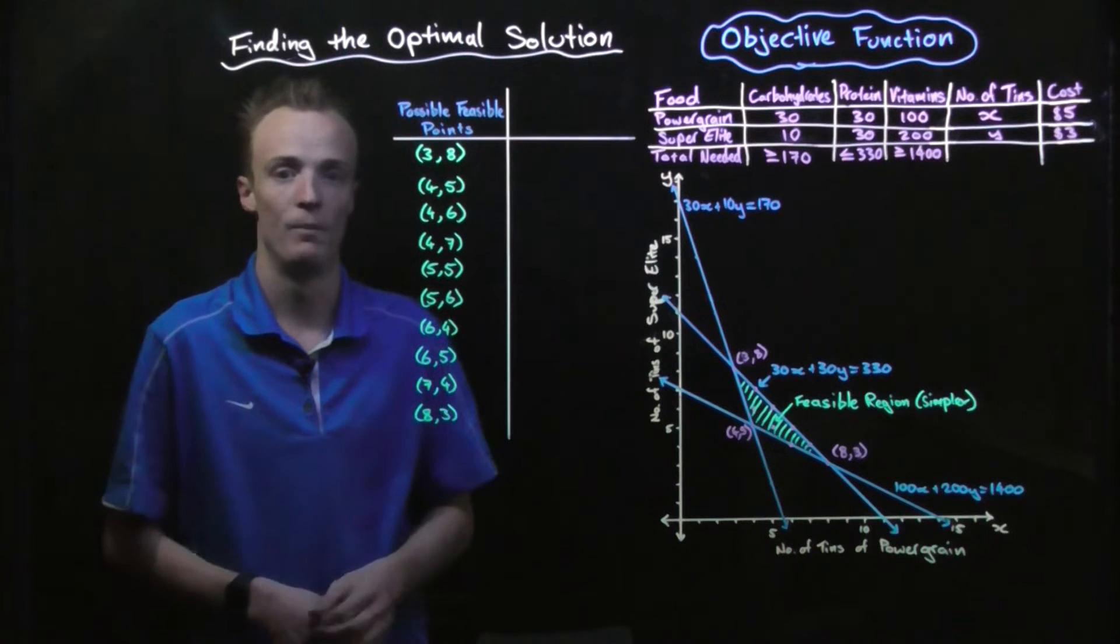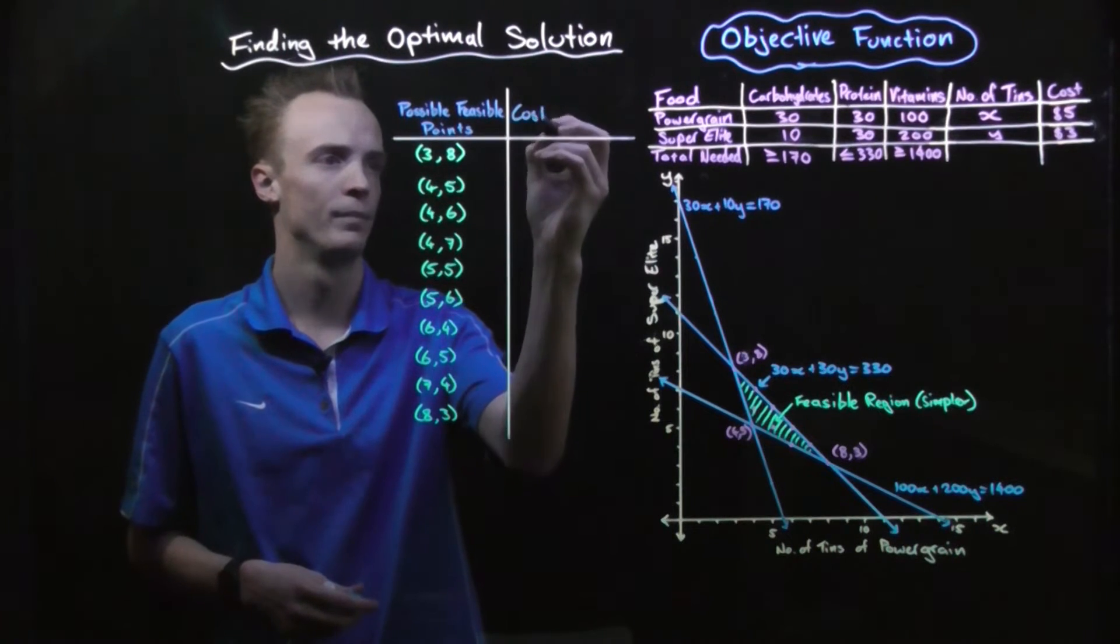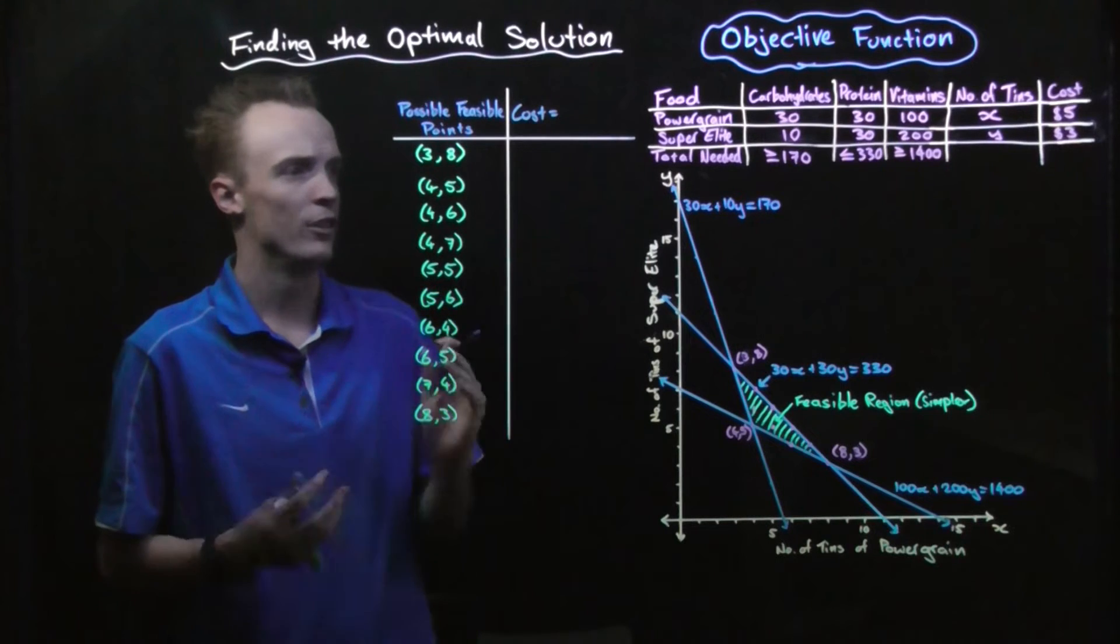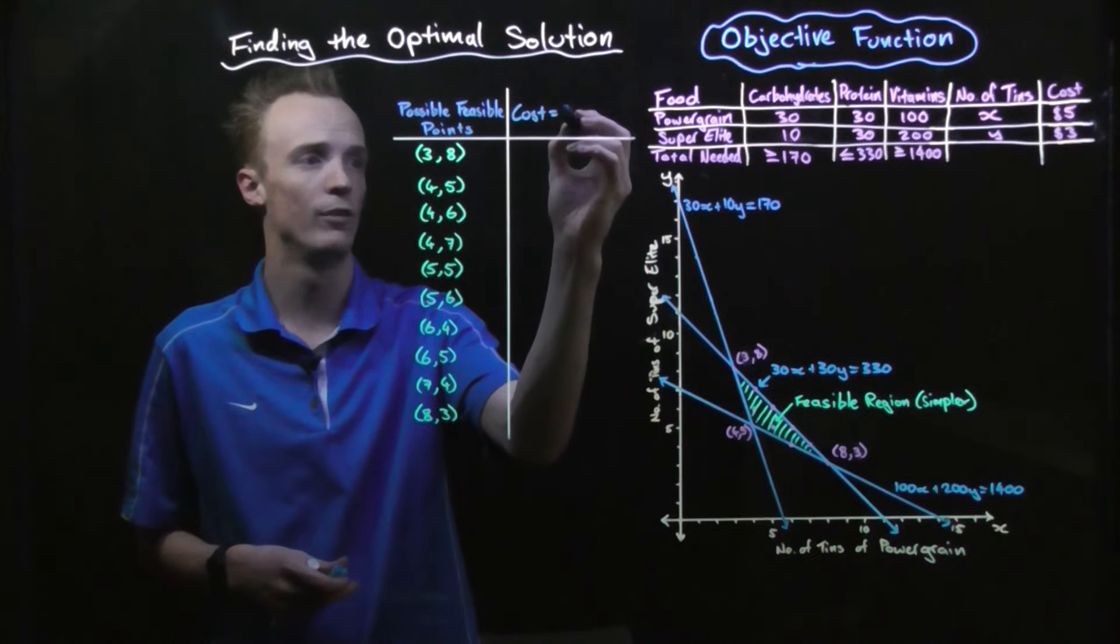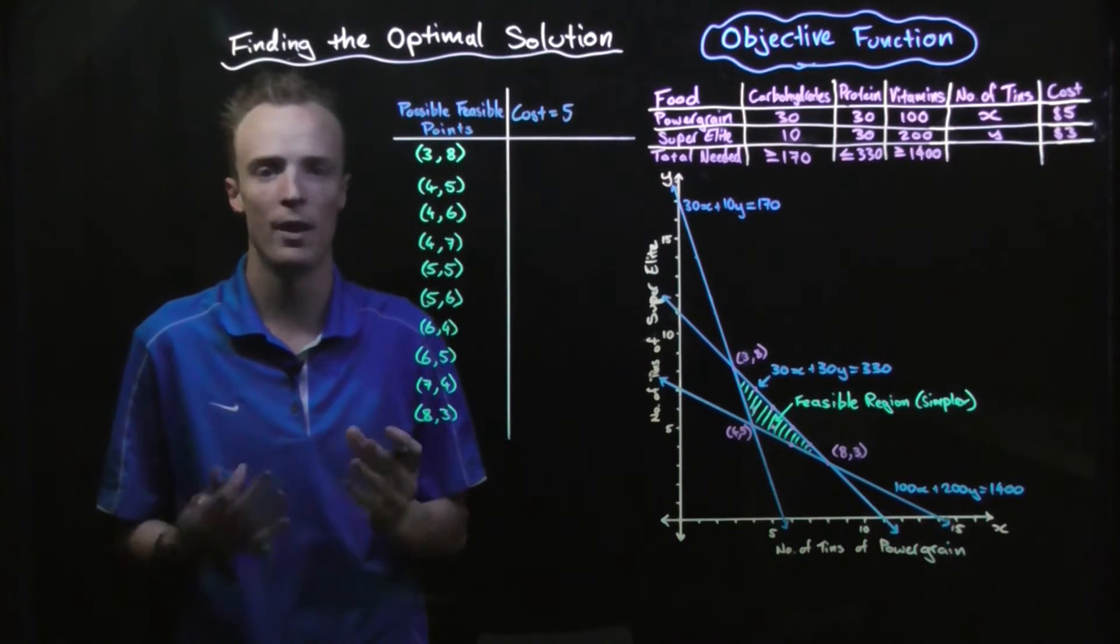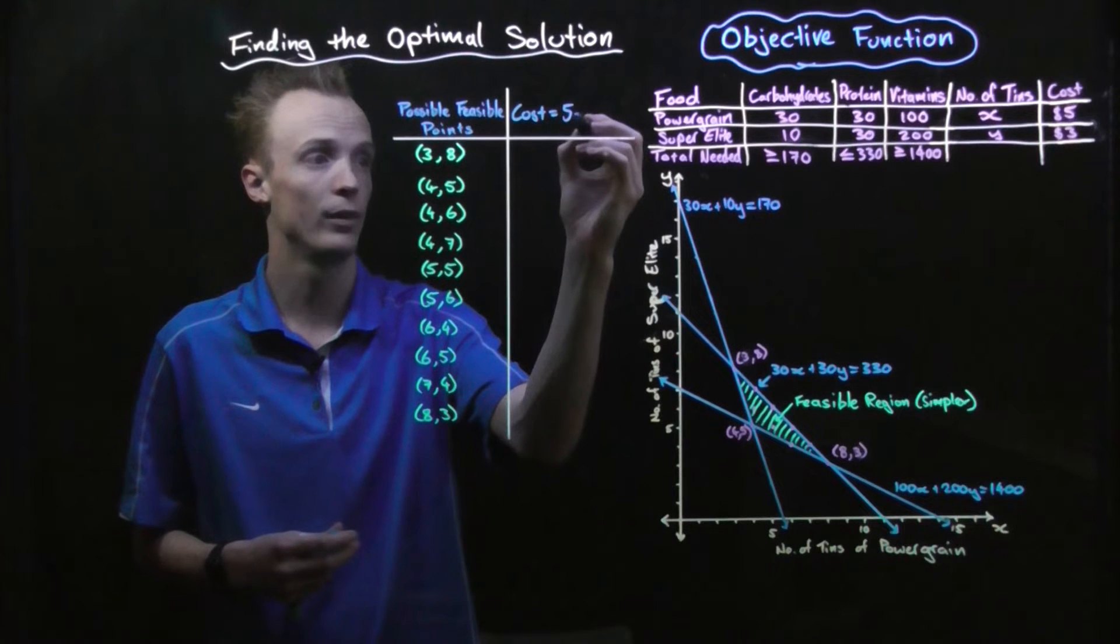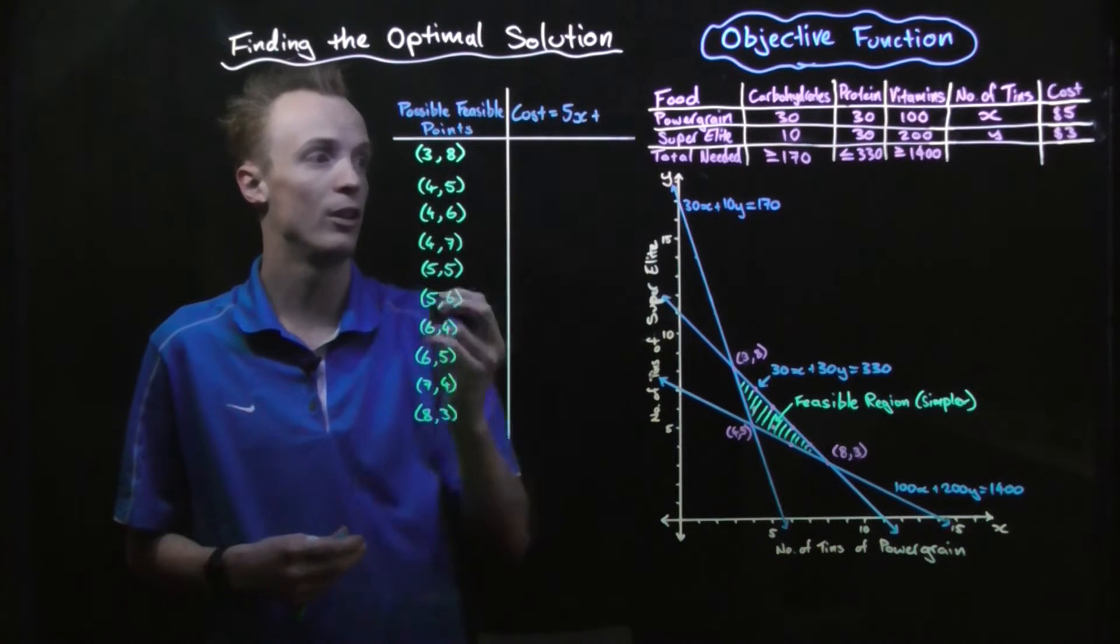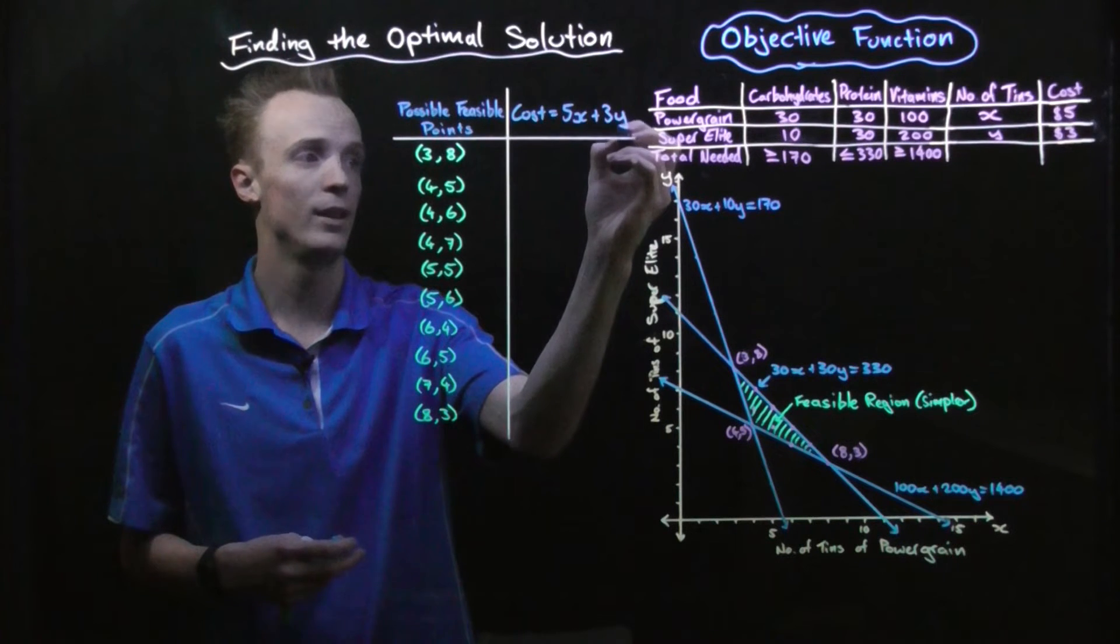So how do you work out that goal? To do that in our problem, to find the cost, we would take the cost of each one of these tins, so the cost of power grain of five dollars, and multiply it by the number of tins of power grain that we'd get, represented by x, and add it with the cost of super elite of three dollars multiplied by the number of tins we buy, which is represented by y.